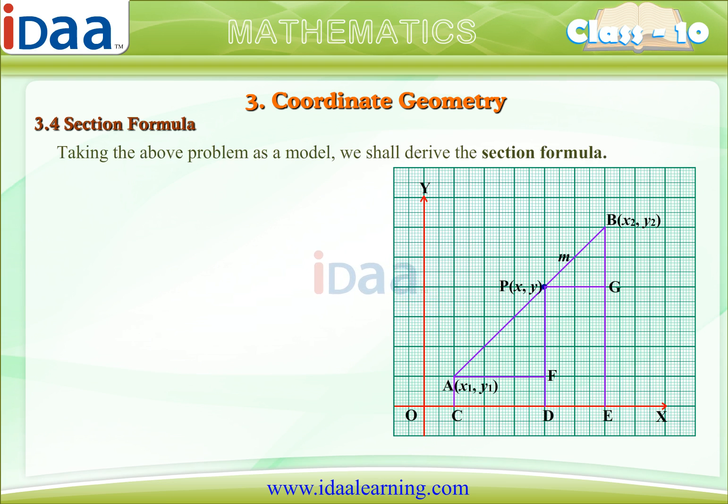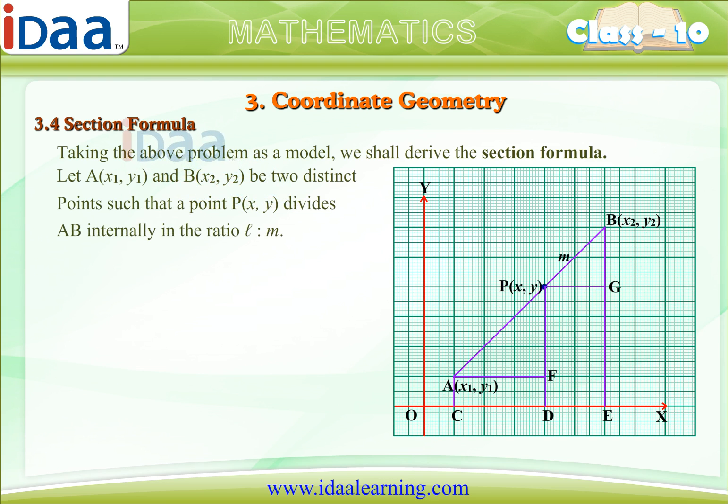Taking the above problem as a model, we shall derive the section formula. Let A(x1,y1) and B(x2,y2) be two distinct points such that a point P(x,y) divides AB internally in the ratio L is to M.